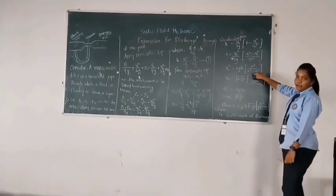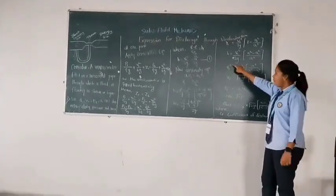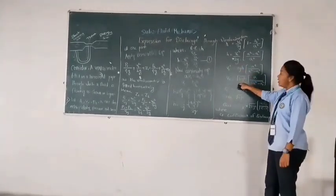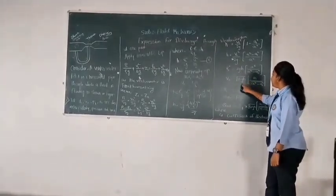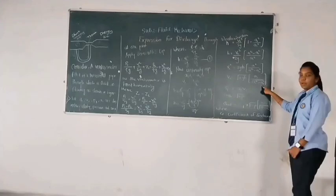Now for removing this square, we take the square root. So it becomes V2 = √(2gH) · A1/√(A1² - A2²).